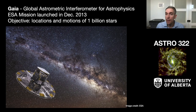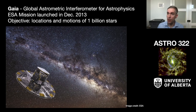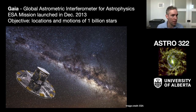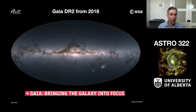Gaia is short for the Global Astrometric Interparameter for Astrophysics — a fairly tortured name to produce the Gaia acronym, though I'm hardly one to talk in this field. It's a mission launched by the European Space Agency. ESA shows up in a lot of materials, and a big thanks to them for all of their open images that they've produced that I show in this video. Its objective is to measure the locations and motions of one billion stars in our galaxy — it's an amazingly challenging mission.